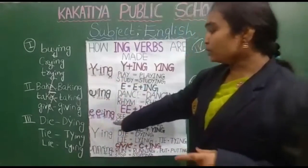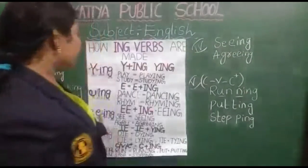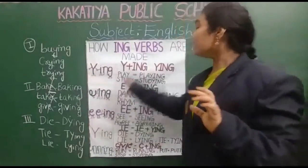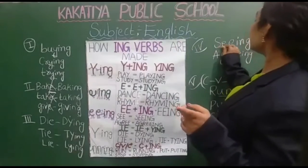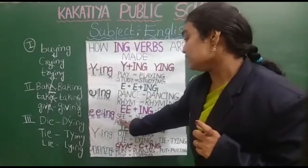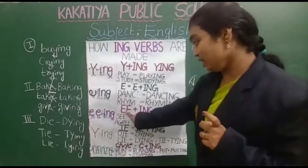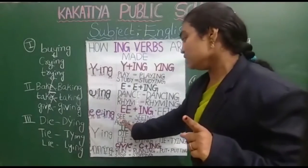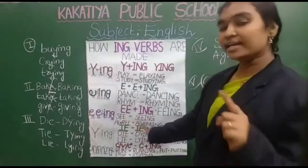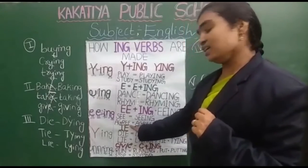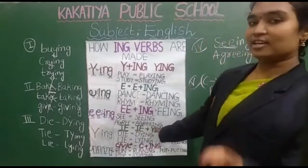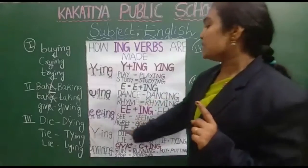Let's come to rule number three. When the word ends with E-E, I-N-G becomes friends — they just add on. For example: S-E-E plus I-N-G — S-E-E-I-N-G, seeing. A-G-R-E-E plus I-N-G — A-G-R-E-E-I-N-G, agreeing. Is it okay children? This is rule number three.